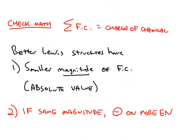When you're calculating formal charges, you can check that you did it correctly because the sum of all the formal charges of all of the atoms has to equal the overall charge of the chemical.